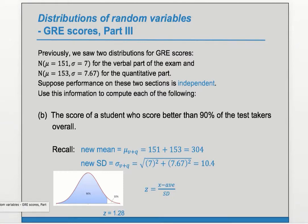Now we know that z should be x minus the average over the SD. We know the z score, we know the average, we know the SD. So we can fill those numbers in, and then we have just x being the unknown value. So we solve for x and we get 317.